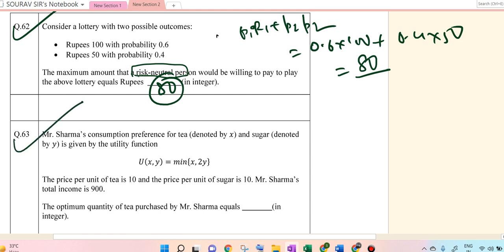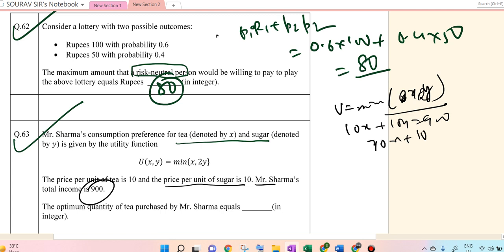Next we go to 63. Mr. Sharma's consumption preference for tea and sugar is given by U equals minimum of x comma 2y. The price per unit of tea is 10 and price per unit of sugar is 10. Mr. Sharma's total income is 900. So U equals minimum of x comma 2y. At equilibrium, x equals 2y. So Px times x plus Py times y equals income: 10x plus 10y equals 900. Substituting 10 times 2y plus 10y equals 900, we get x equals 30 and y will be half of it, so y equals 60.